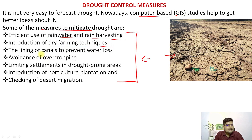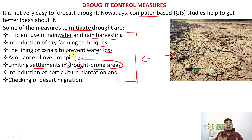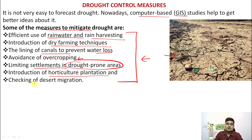Other drought control measures include introduction of dry farming techniques, lining of canals to prevent water loss, avoidance of overcropping and single cropping — which also leads to land degradation — and limiting settlements in drought-prone areas, as more settlements mean more water demand and less water for irrigation. Introduction of horticulture plantation and checking desert migration through shelter belt plantations are also key measures.